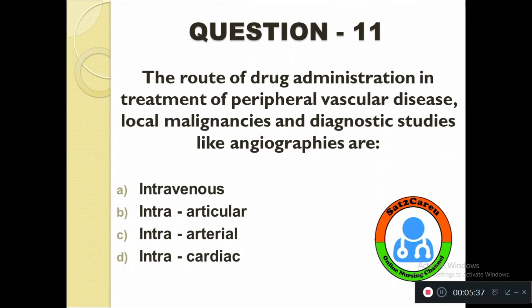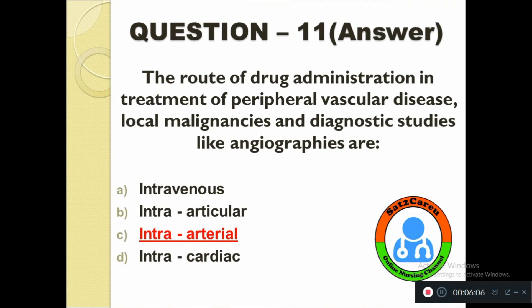Question number eleven: The route of drug administration used in the treatment of peripheral vascular disease, local malignancies, and diagnostic studies like angiographies is — option A: Intravenous, B: Intraarticular, C: Intraarterial, D: Intracardiac. The right answer is Intraarterial.